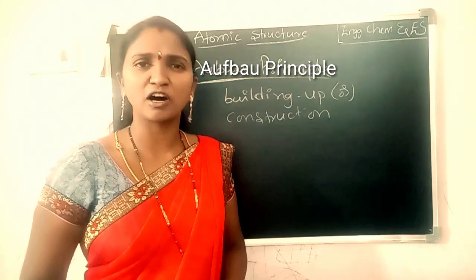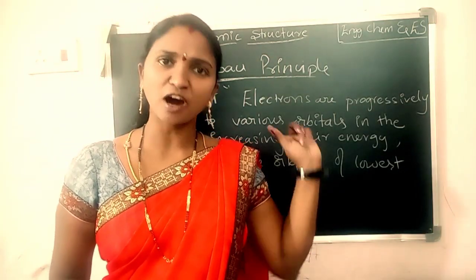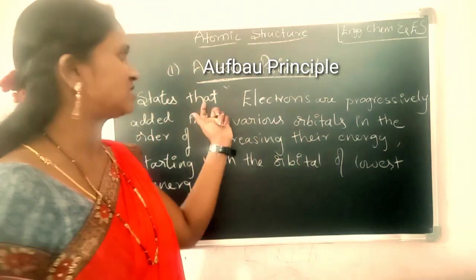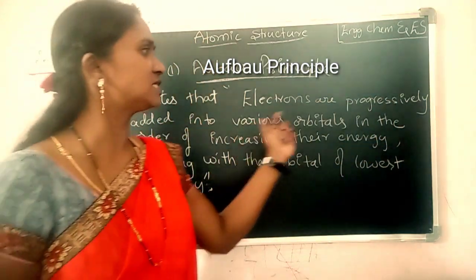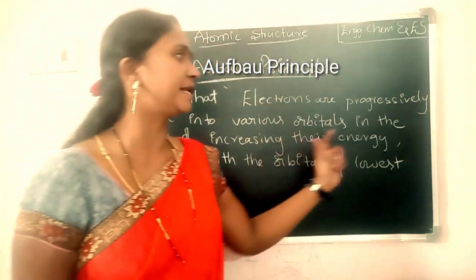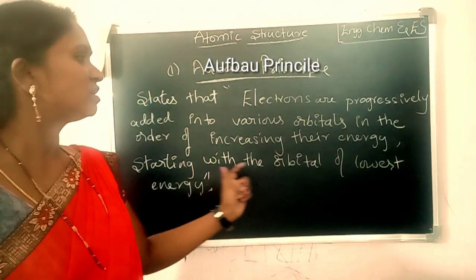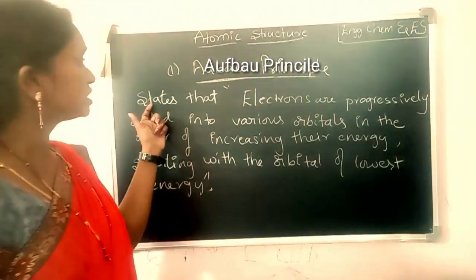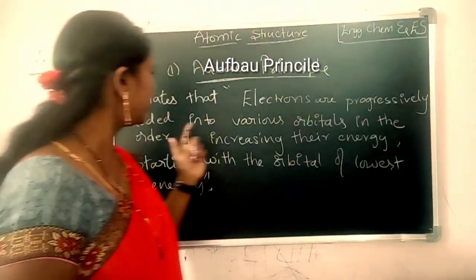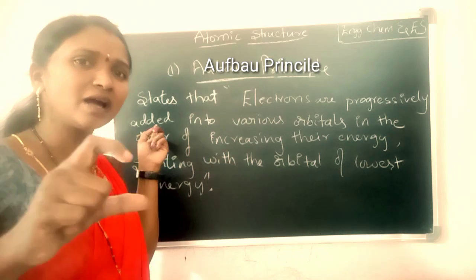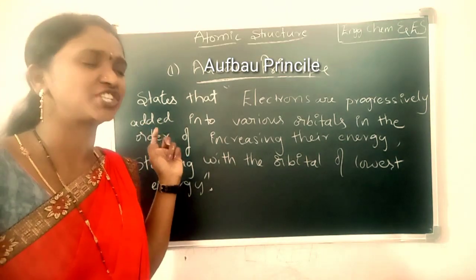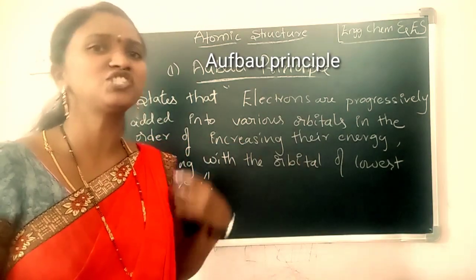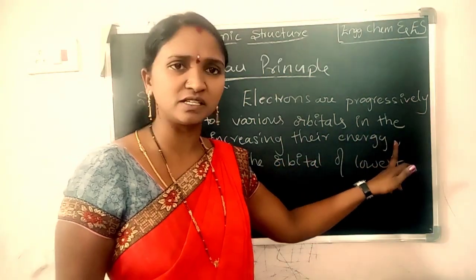Now see the definition of Aufbau principle: The Aufbau principle states that electrons are progressively added into various orbitals in the order of increasing their energy, starting with the orbital of lowest energy.